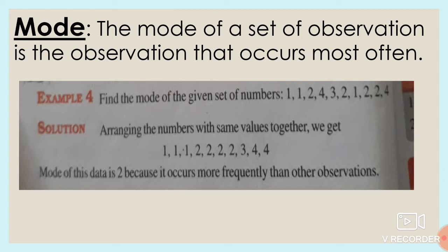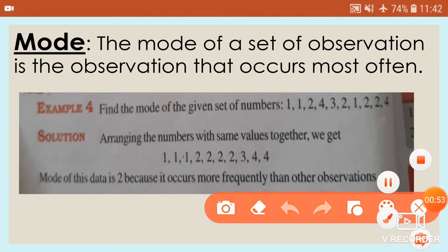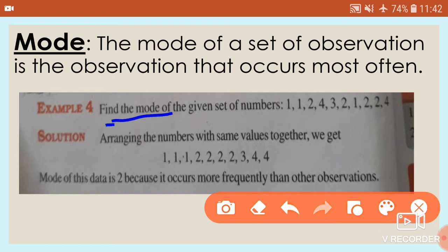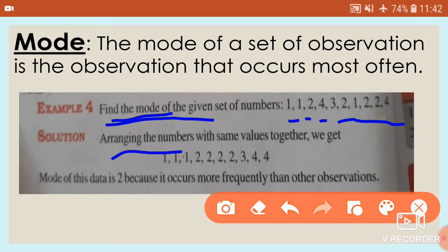Let's see example number 4 — we find the mode of a given set of numbers. The numbers are 1, 1, 2, 4, 3, 2, 1, 2, 2, 4. We will arrange these numbers in ascending order, grouping numbers with the same values together.